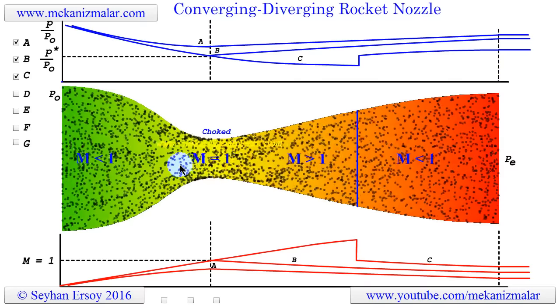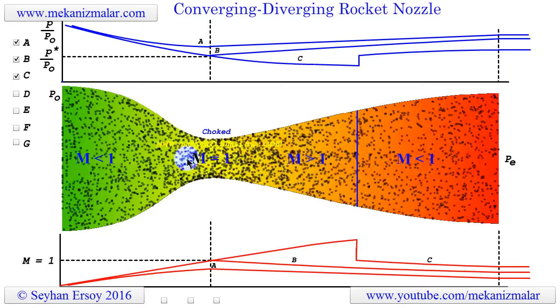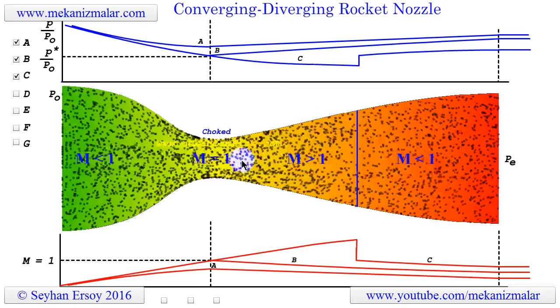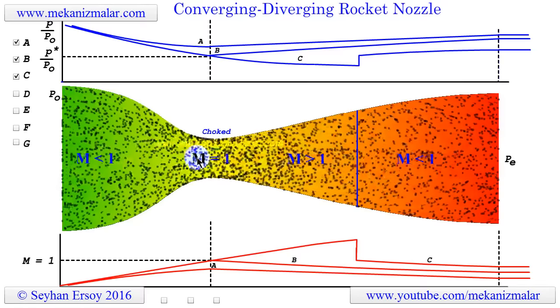Also, the mass flow passing through the nozzle is exactly equal to the mass flow of case B, where the flow was choked. However, the flow velocity will show a drastically new behavior in the diverging section of the nozzle.